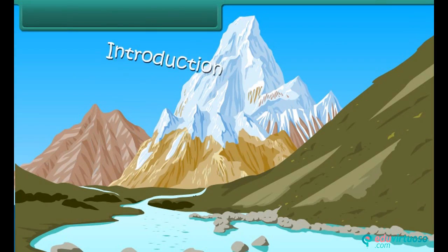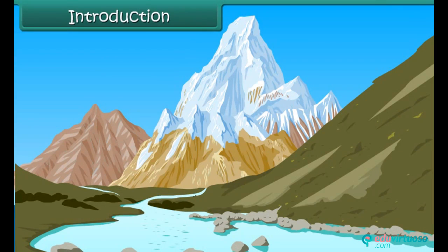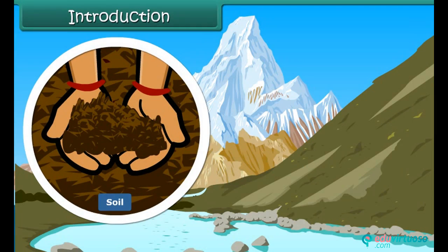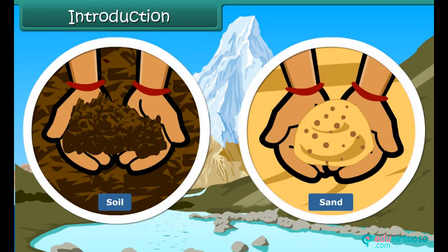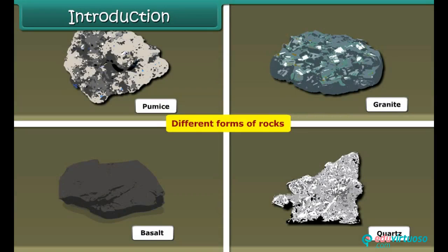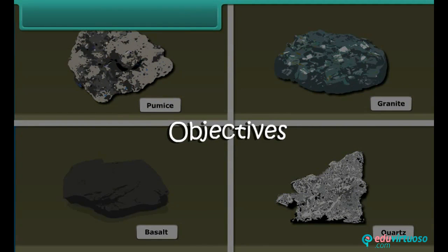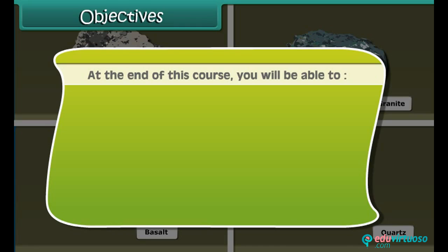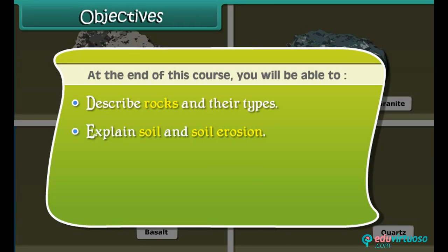Hi friends! You must have seen mountains, soil in the yard, and sand on the road. You also must have collected some stones. Do you know what they are made up of? There are different forms of rocks. Let us discuss different kinds of rocks. At the end of this course, you will be able to describe rocks and their types, explain soil and soil erosion, and discuss about minerals.